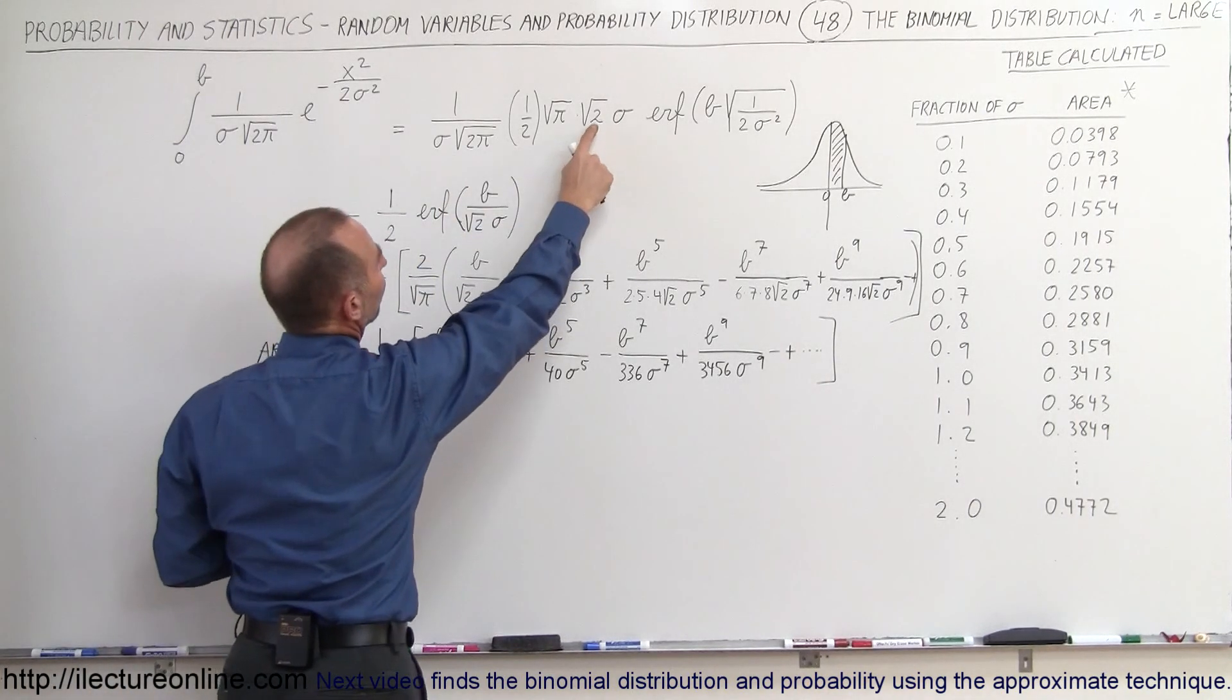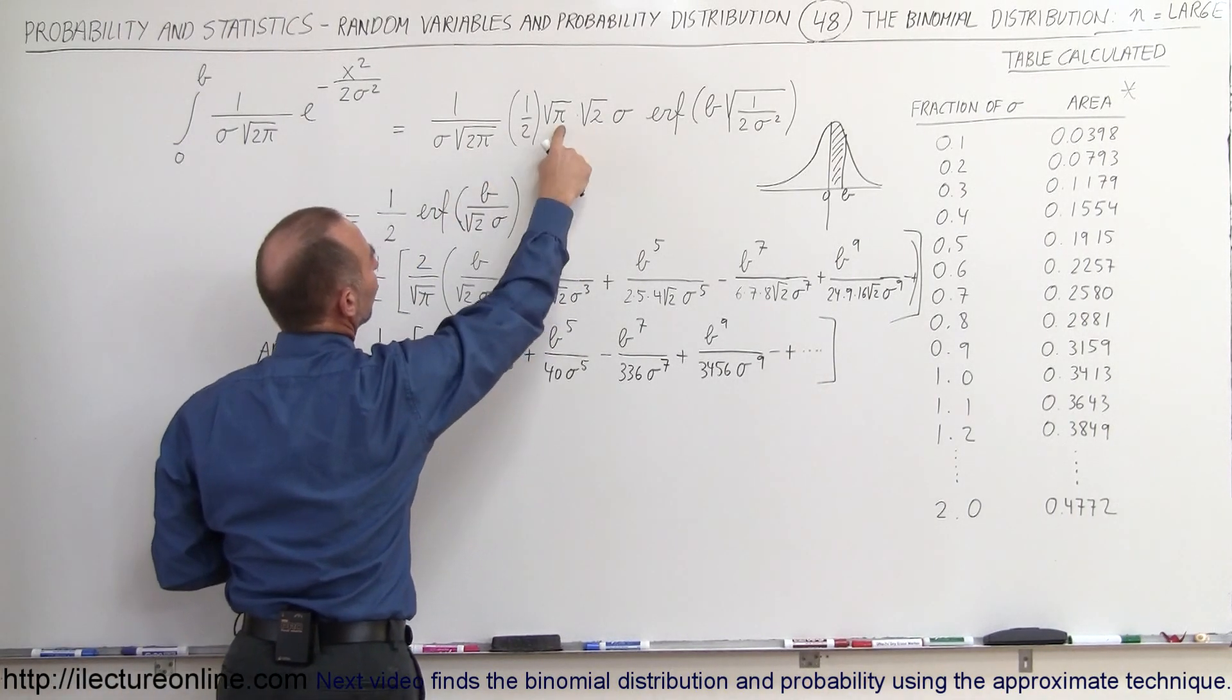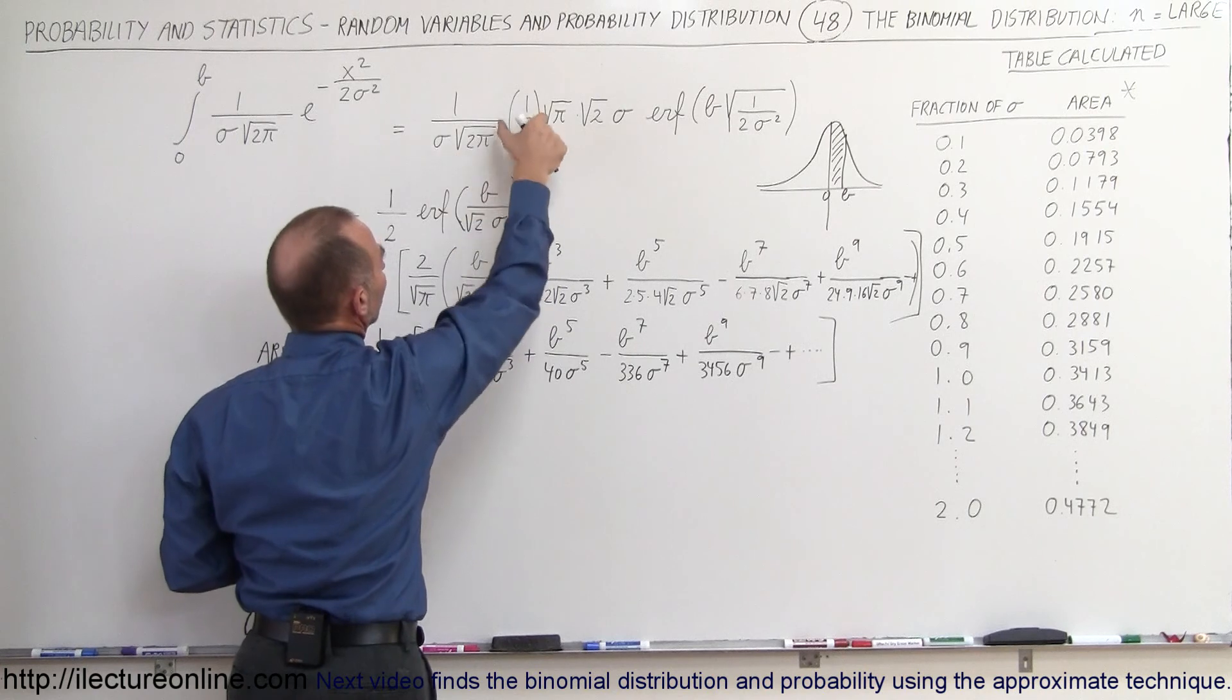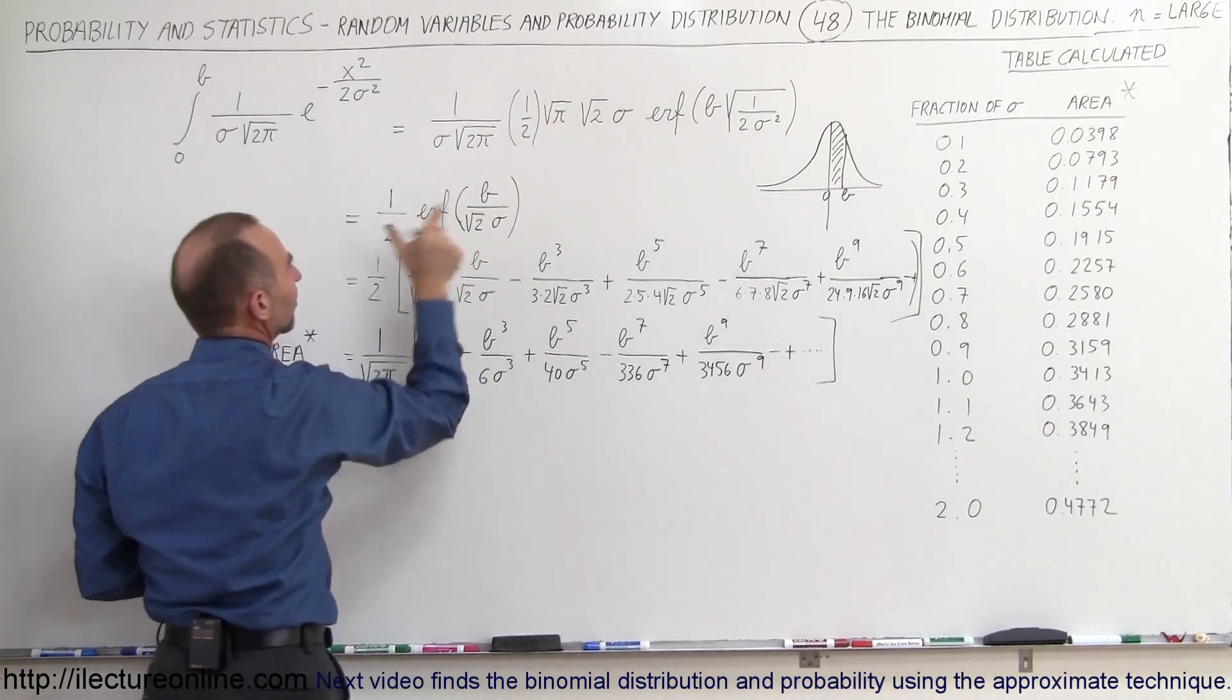Also, when we simplify this, notice that the square root of two cancels out, the square root of pi cancels out, the sigma cancels out, so we just end up with one half times the error function.